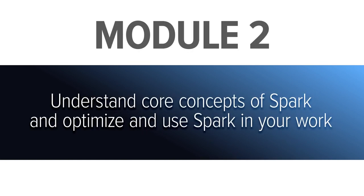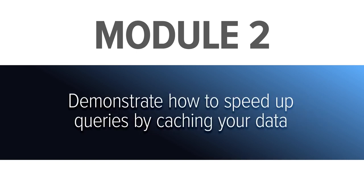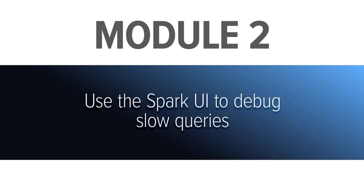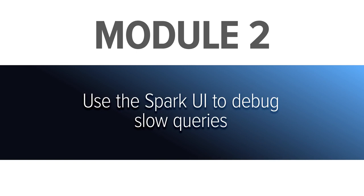In module 2, we'll cover the core concepts of Spark, and you'll be able to optimize and use Spark in your own work. Spark SQL will look very similar to the way you've accessed data in databases and in previous courses in this series, with some key distinctions because of its distributed nature. Spark itself is not a database — it is a computation engine. We will demonstrate how to speed up your queries by caching your data and how to use the Spark UI to debug slow queries, which can also fix queries that might not complete otherwise.